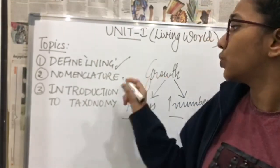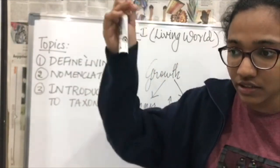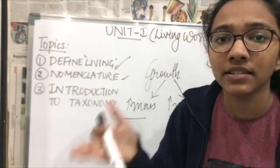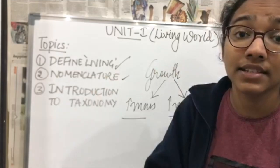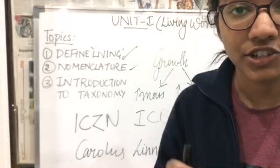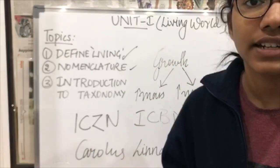Hence people had to come up with a system of naming these organisms and this system is known as nomenclature. To reach the step of nomenclature, you need several processes which begin with characterization, that is defining the character of the organism, second is identification, and third is classification followed by nomenclature.